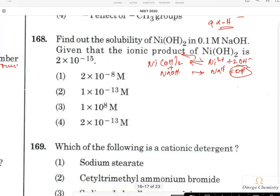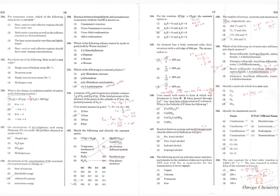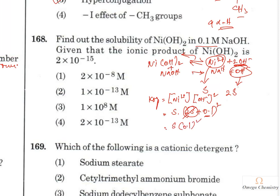At equilibrium, let the molar solubility of Ni(OH)₂ be s, so [Ni²⁺] = s. The OH⁻ concentration is approximately 0.1 M from NaOH (since 2s is negligible compared to 0.1). So Ksp = [Ni²⁺][OH⁻]² = s × (0.1)².